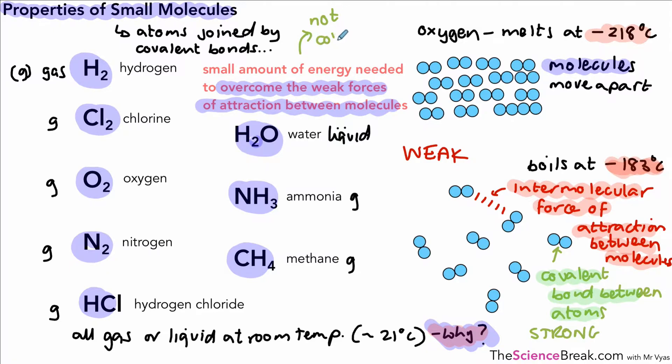And remember it's not the covalent bonds that we are trying to break apart. It's the weak forces of attraction between the molecules. And this explains why substances made of small molecules have low boiling points and low melting points.